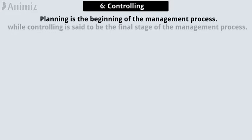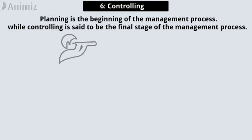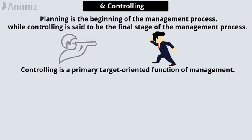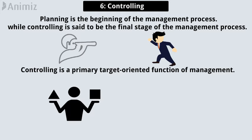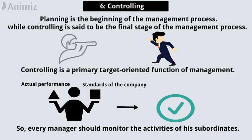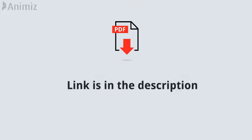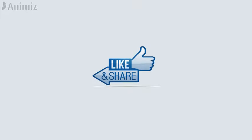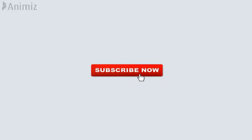The last function in management process is Controlling. Planning is the beginning of the management process, while controlling is said to be the final stage. If planning is looking forward, controlling is looking backwards. Controlling is a primary target-oriented function of management. It is basically the comparison between actual performance and the standards of the company to ensure that the taken action was correct. So every manager should monitor the activities of his subordinates. If you want to download the PDF, the link is in the description. Like the video, and please don't forget to subscribe to my channel.